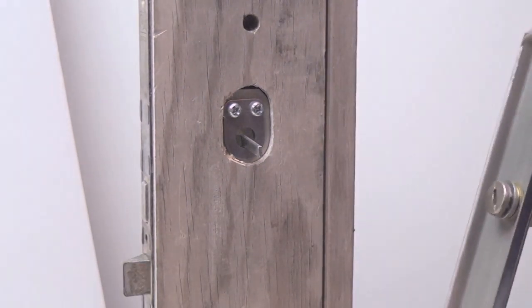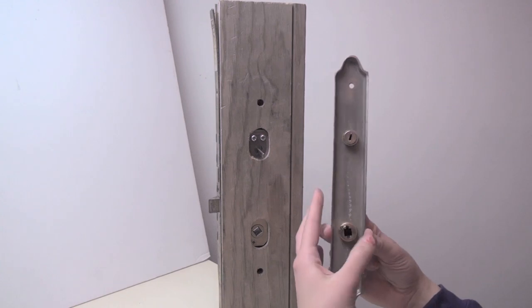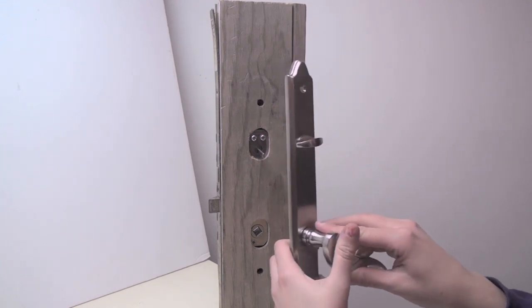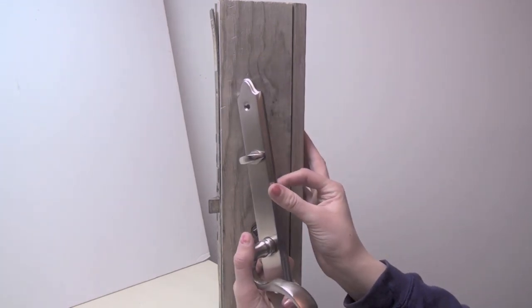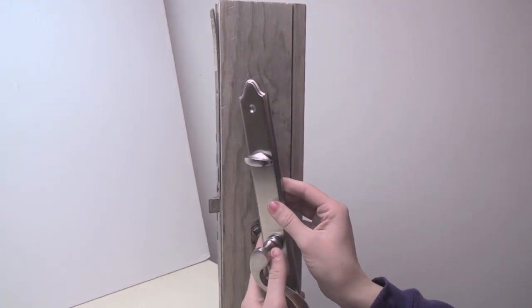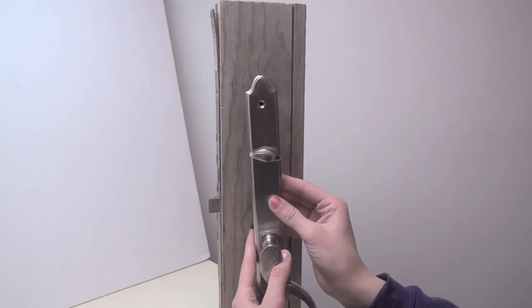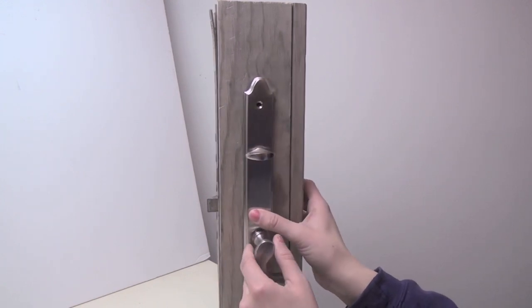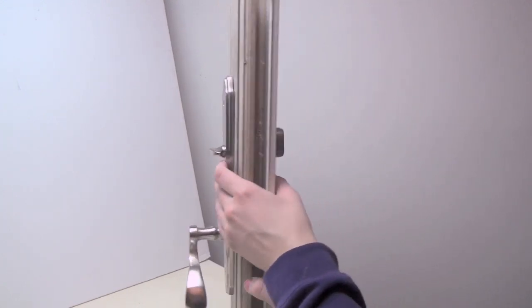The interior trim, the handle and plate with the thumb trim, needs to be installed on the inside of the door. Carefully fit the thumb trim over the actuator tailpiece. Keep in mind that however you install it is the position the thumb trim will be in when the door is unlocked.